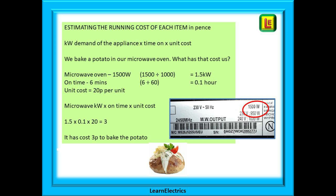Let's say we bake a potato in a microwave oven. The microwave oven is rated at 1500 watts — convert this to kilowatts by dividing by 1000, giving us 1.5 kilowatts. The microwave is on for 6 minutes, so 6 divided by 60 gives us 0.1 hours. Our unit cost is 20 pence per unit. So: 1.5 kilowatts times 0.1 hours times 20 pence equals 3. It has cost just 3 pence to bake the potato.